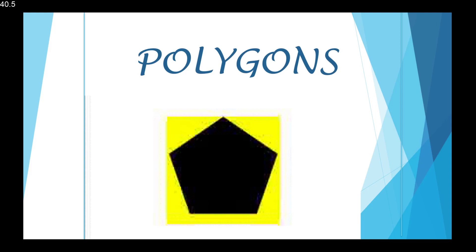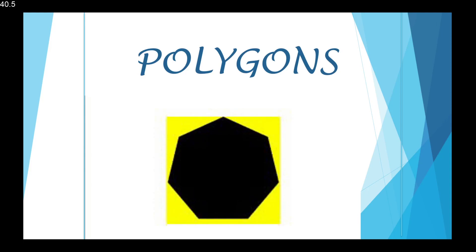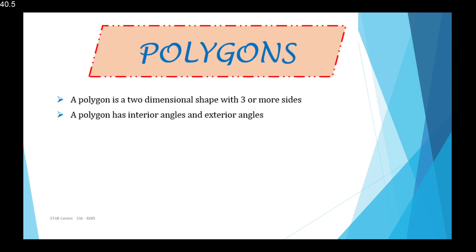Hi everyone, welcome to my tutorial on polygons. A polygon is a two-dimensional shape with three or more sides. Two-dimensional means it's a flat shape.